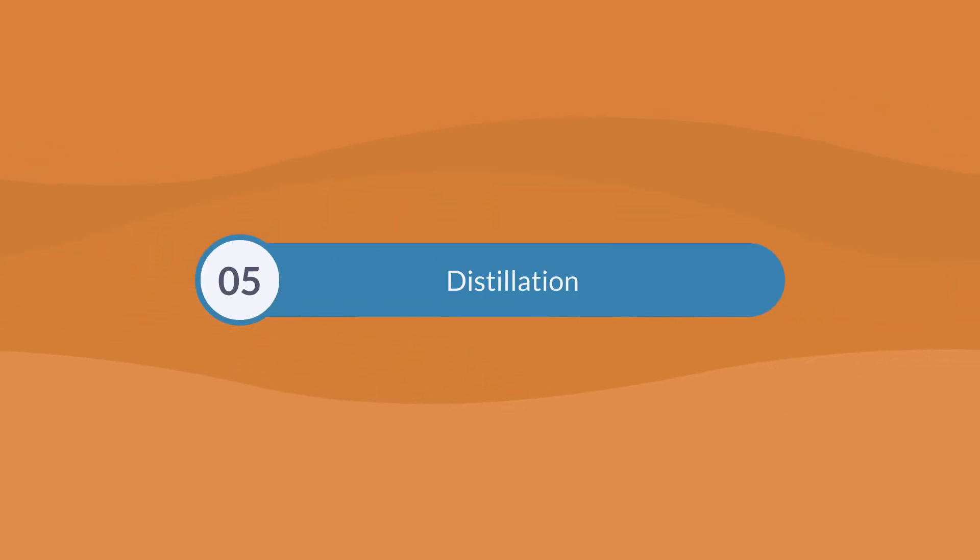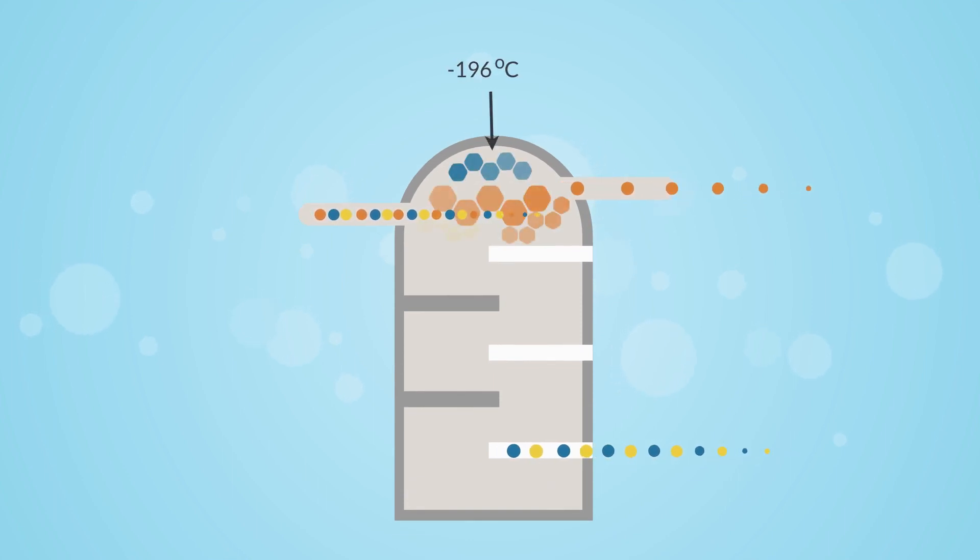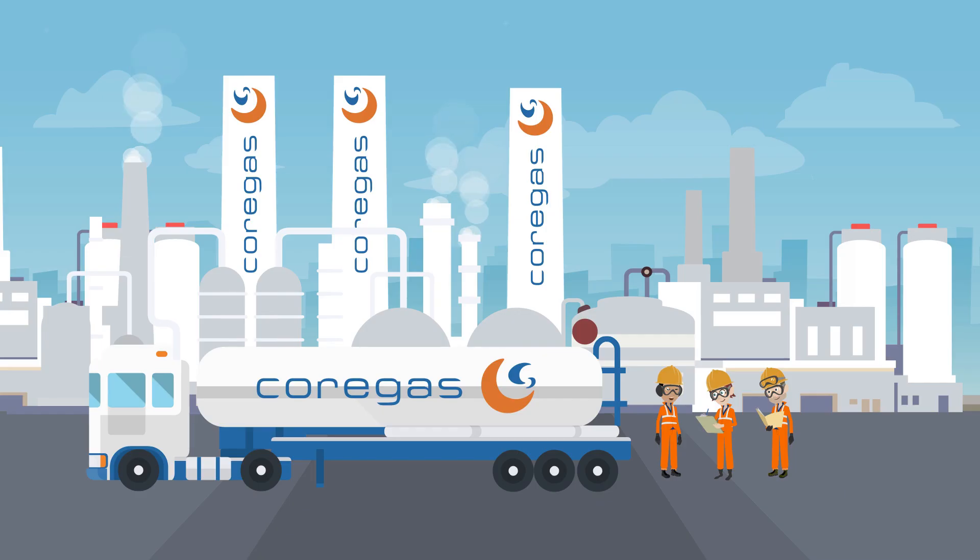Step 5 – Distillation: Chilled air is fed into the distillation tower which operates at approximately minus 196 degrees Celsius. Nitrogen gas and liquid are extracted from the top of the column. Oxygen gas and liquid are collected near the base of the column. Liquefied gases produced by CoreGas support many applications.